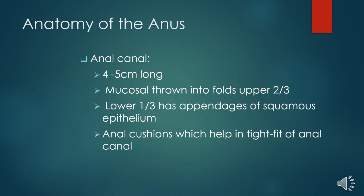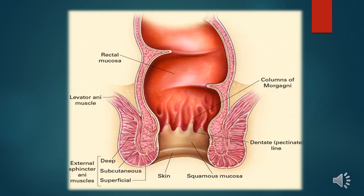The anus of an adult is about four to five centimeters long and is divided into two parts. Two-thirds of it is covered by the rectal mucosa, which is thrown into folds, and the lower part is covered by skin or squamous cell epithelium. The anal cushion is there to tighten the anal canal. This picture describes the rectal mucosa, the upper two-thirds with the mucosa thrown into folds, and then the dentate line that demarcates the inner and outer parts of the anus.